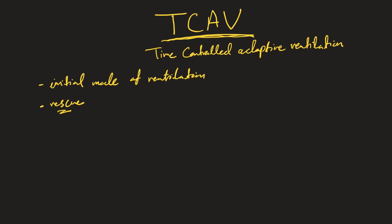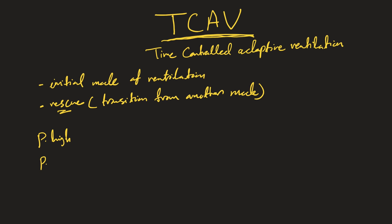Today I'm going to give you the how-to for setting up your ventilator, whether using TCAV as an initial mode or as a rescue transition from another mode. To set up a patient on TCAV, you need to provide four values on top of FiO2 and respiratory rate: P-high, P-low, T-high, and T-low. P-high and T-high represent the CPAP phase, and P-low and T-low represent the release phase.